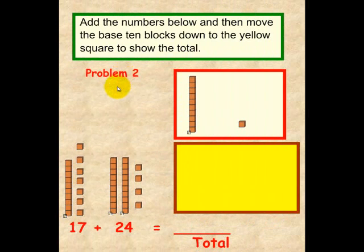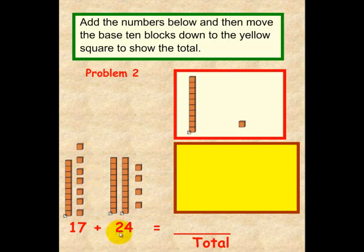Just like in the previous problem — problem two — please do not pick up a pen until you're asked to do so. You'll notice that we have 17: one 10 and one, two, three, four, five, six, seven ones, plus 24: two 10's and one, two, three, four. The question is, how many 10's do we have? So, if you would, please pick up a pen and write a line to represent how many 10's, and also how many 1's, and place the total here. Please do that now.